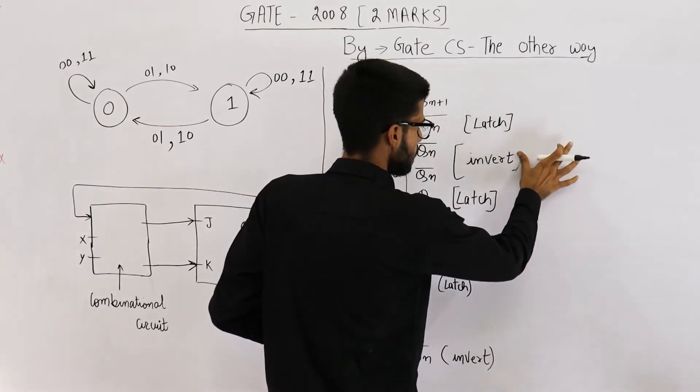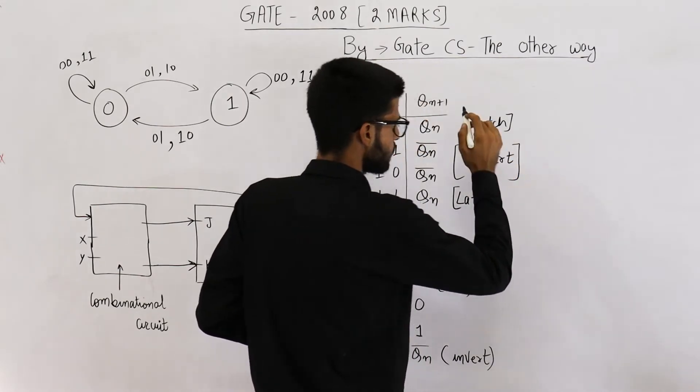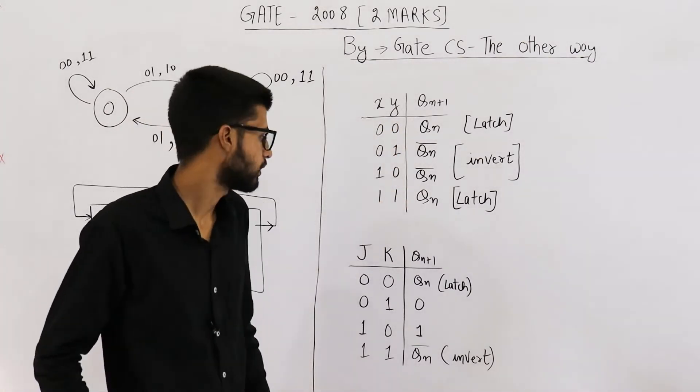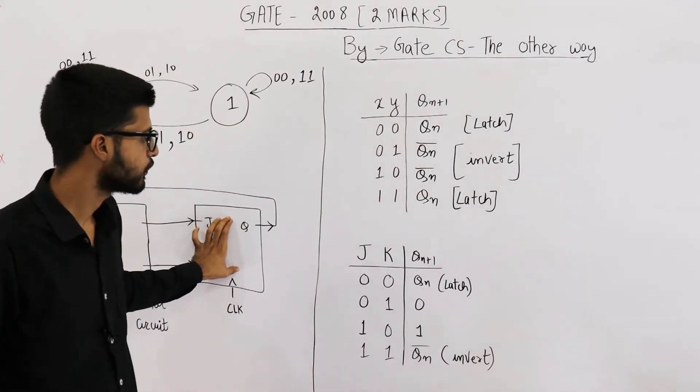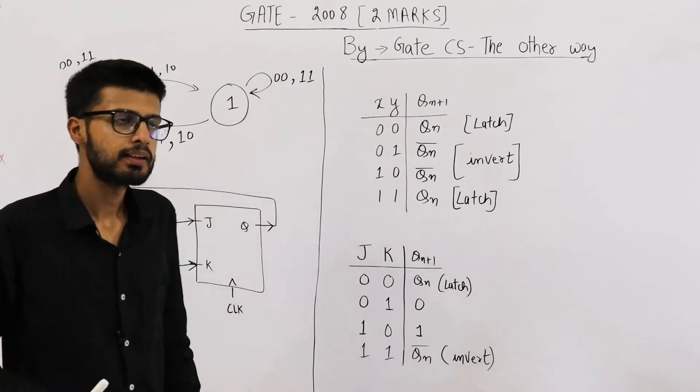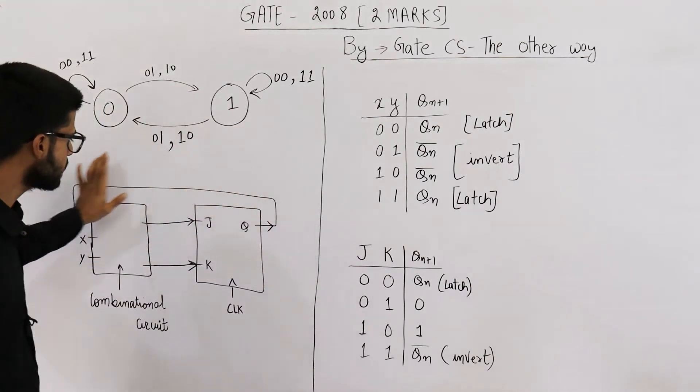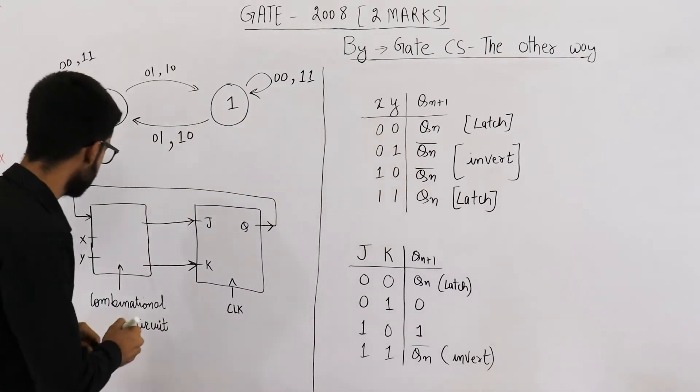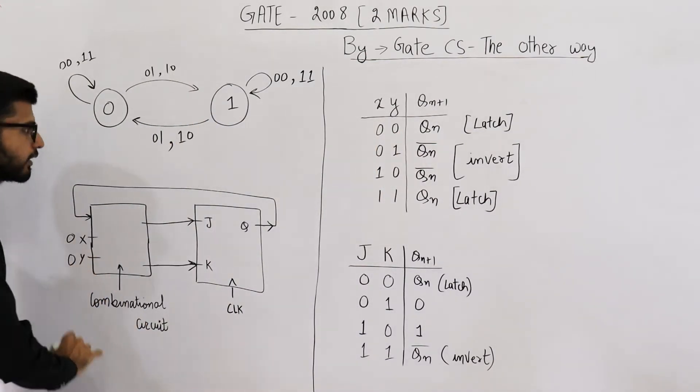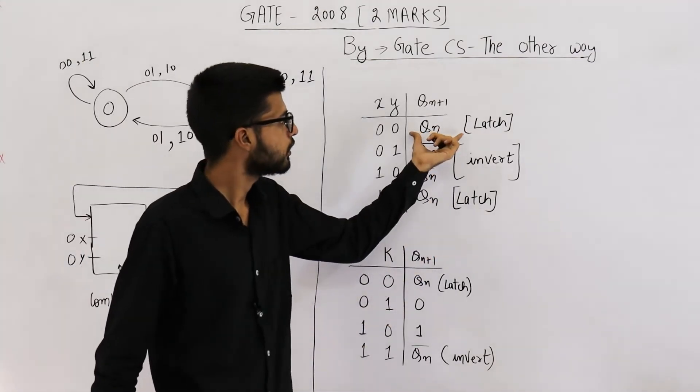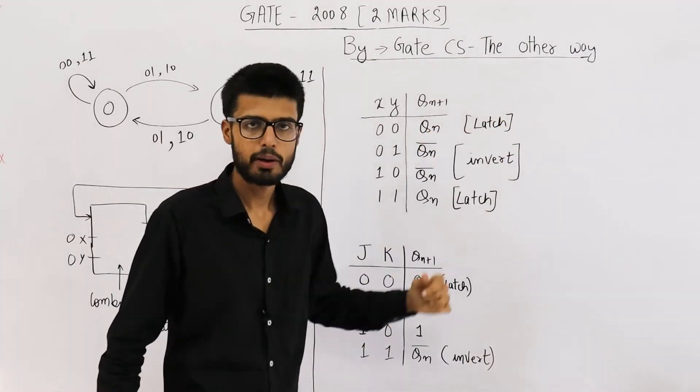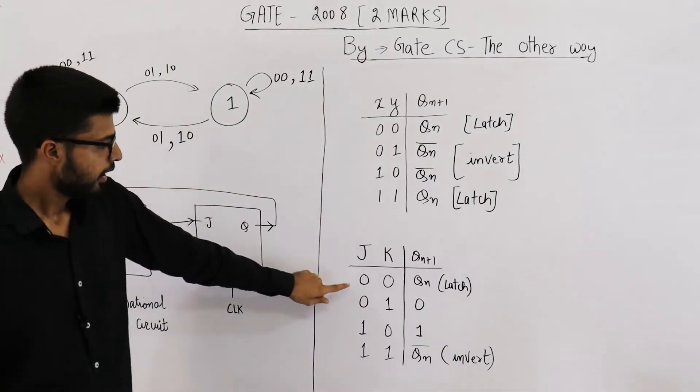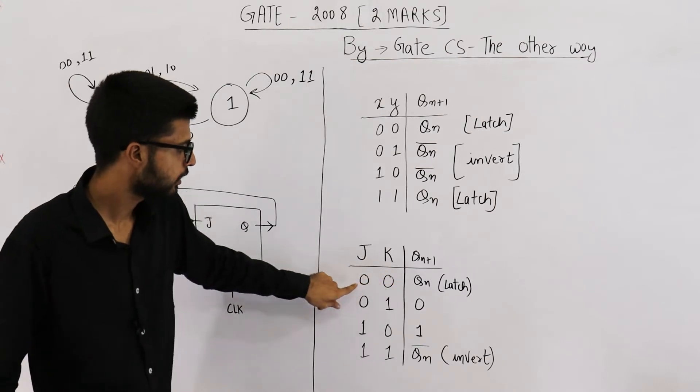This flip-flop we want to implement. We already have a JK flip-flop. JK works like this. That means to this entire circuit, if we give 0,0 as input - that means if 0 and 0 is applied here, we want latch to happen. That means this Q must not change. And something similar happens in JK also.